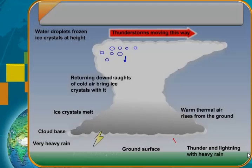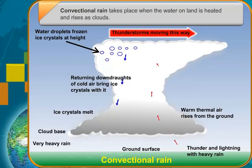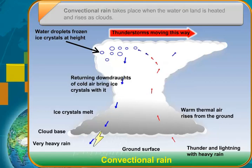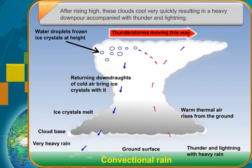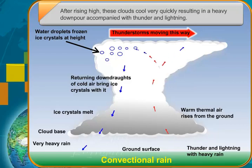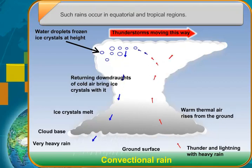Convectional rain takes place when the water on land is heated and rises as clouds. After rising high, these clouds cool very quickly, resulting in a heavy downpour accompanied with thunder and lightning. Such rains occur in equatorial and tropical regions.